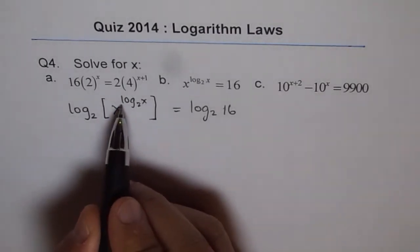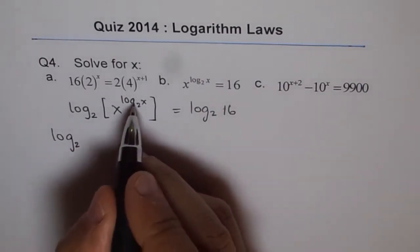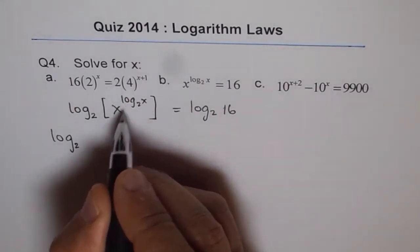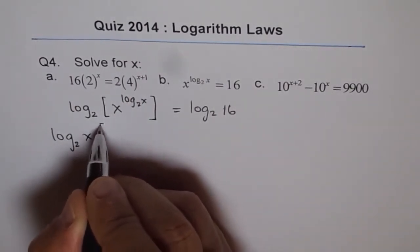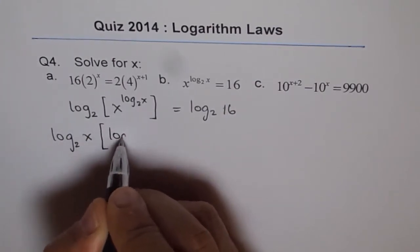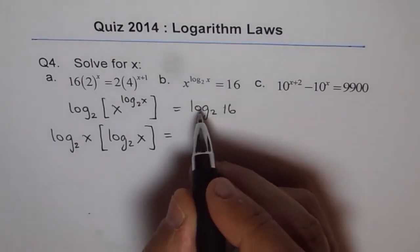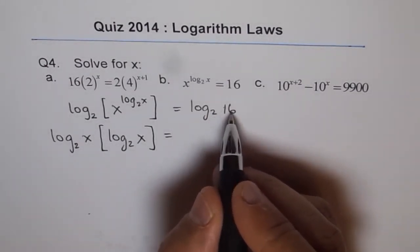So then we get log to the base 2 of x, this thing comes here, times log to the base 2 of x, equals to log to the base 2 of 16.